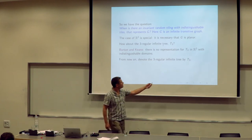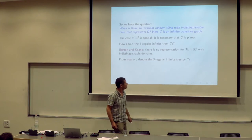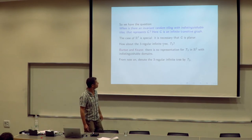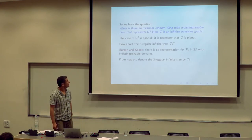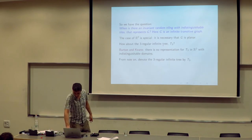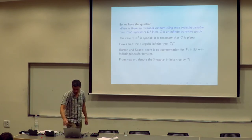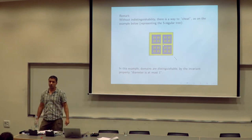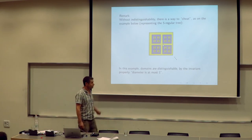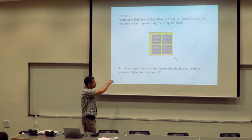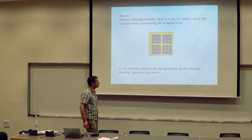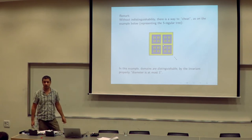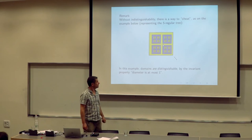Burton and Kean have shown that the three-regular tree cannot be represented in the plane by indistinguishable domains — at least for the discrete version of the question, the answer is negative. Indistinguishability is certainly needed for this negative result; otherwise we are able to represent a regular tree in the plane invariantly. For instance, take a certain pattern, continue it to small and large scales, and take some random shifts — this gives the five-regular tree as an invariant domain representation.